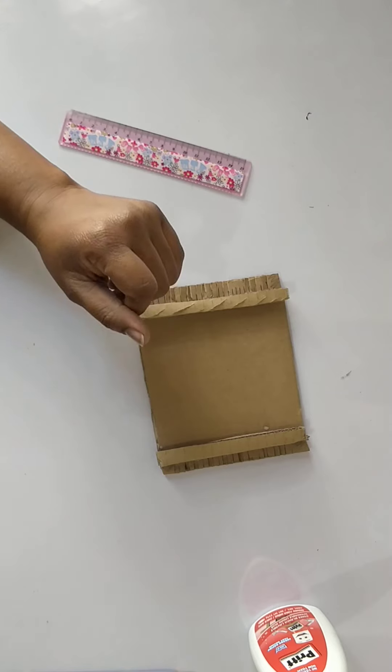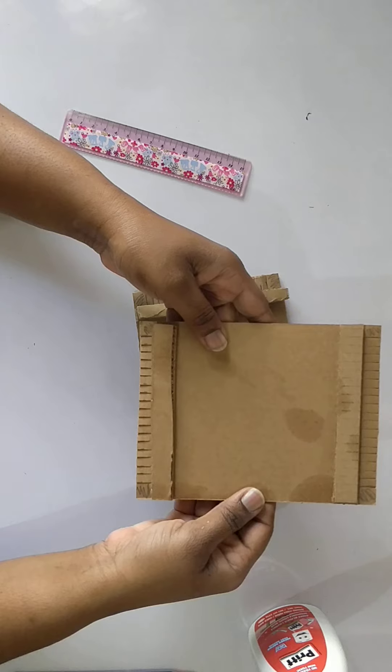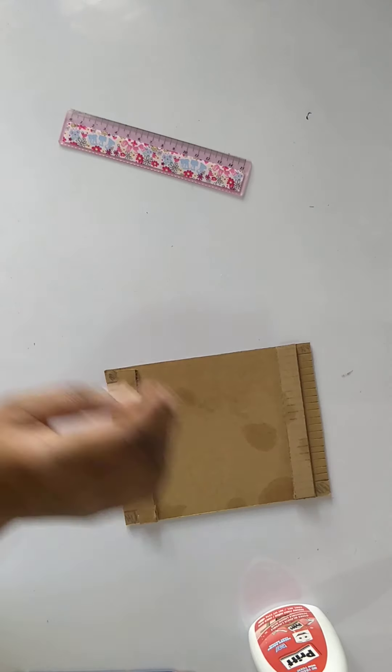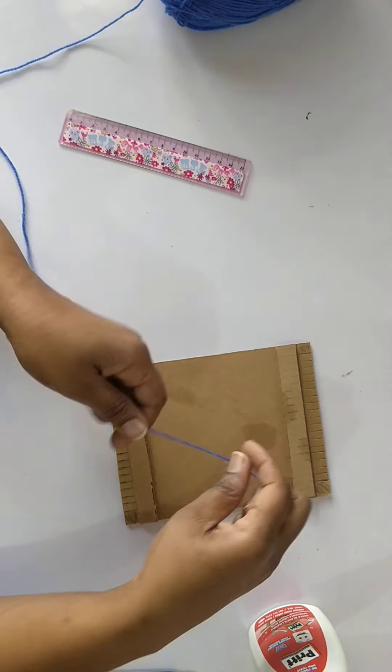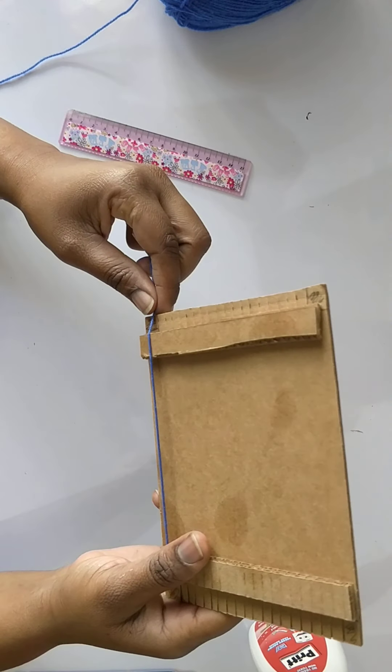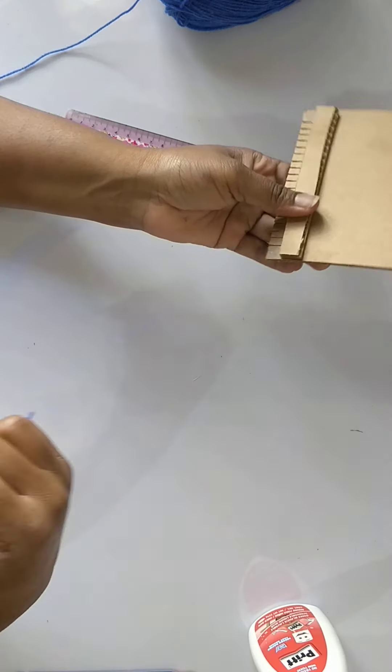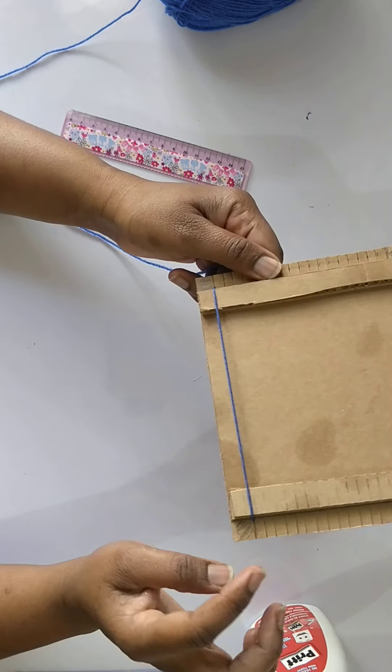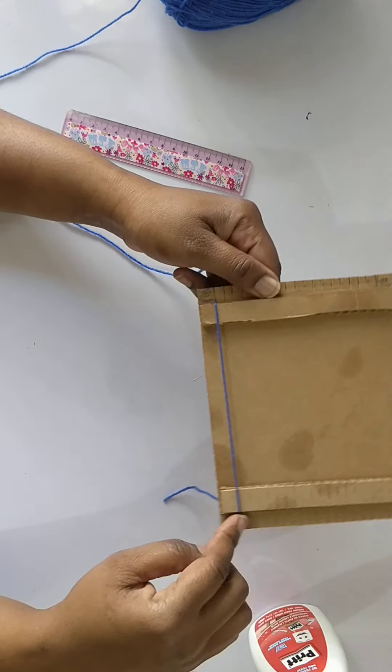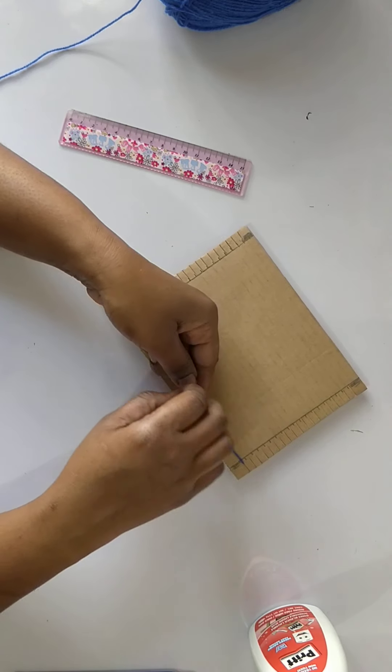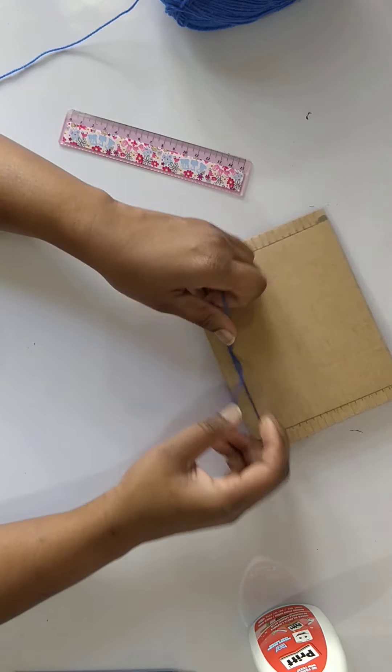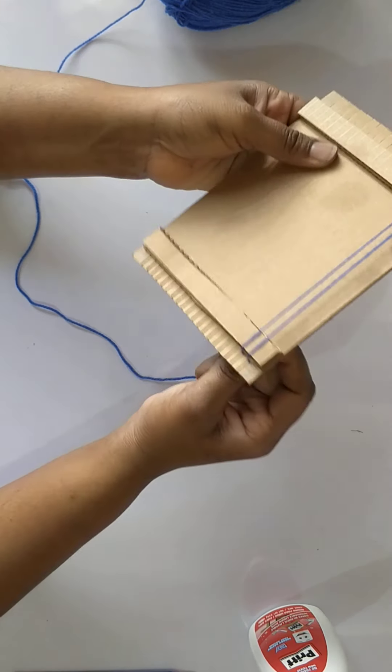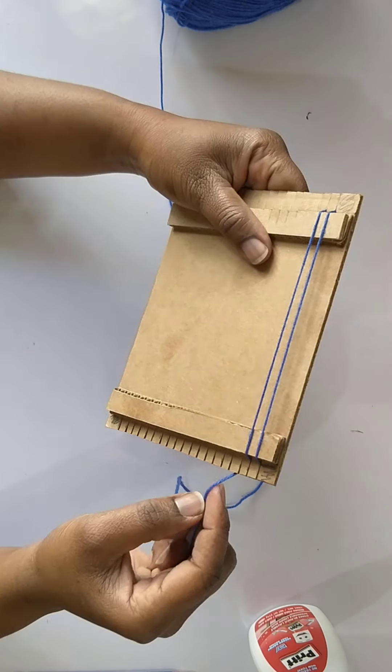And there you have a cardboard loom. I had previously made this one, so I'm going to show you how to create your weft. You're going to take your yarn and from the front you're going to push the yarn through one of the marks that you had made. You're going to come to the back and tie it. Now we're ready to begin.